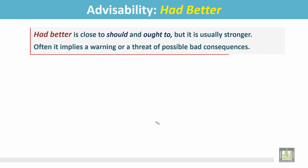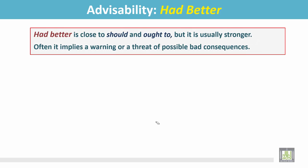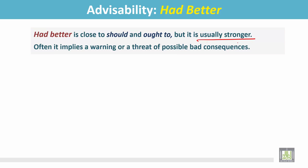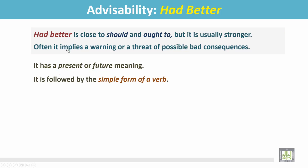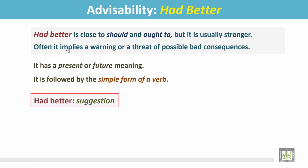Advisability: Had better. Had better is close to should and ought to, but it is usually stronger. Often, it implies a warning or a threat of possible bad consequences. It has a present or future meaning and is followed by the simple form of a verb.